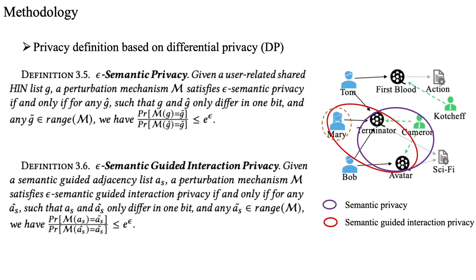Under this setting, we rigorously formalize two kinds of privacy for HIN-based FedRec in the light of differential privacy, including the privacy reflecting the user's high-order patterns from shared HINs and the privacy of user-item interactions with specific patterns in the private HIN.